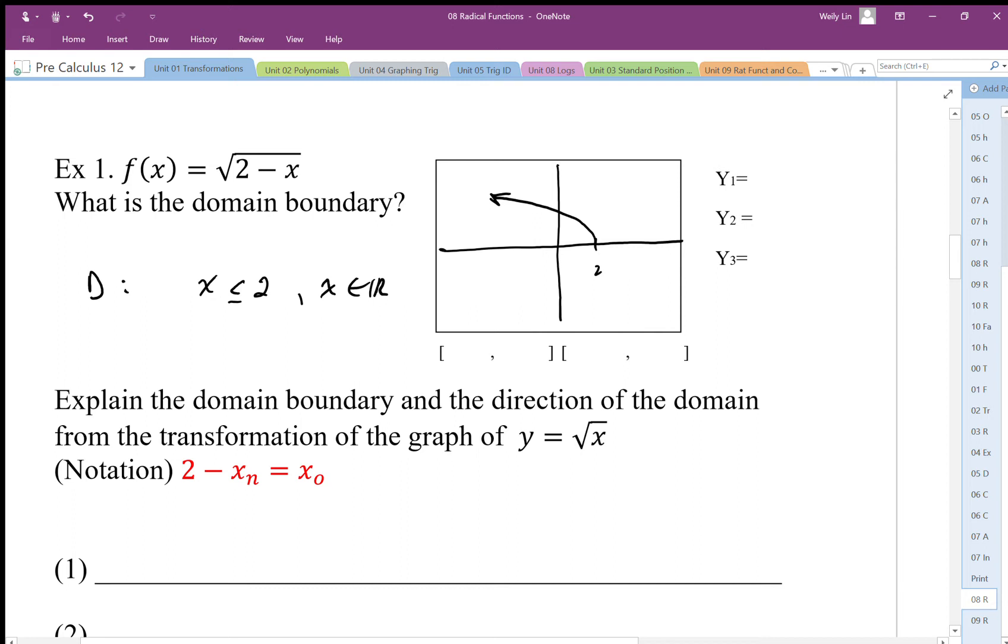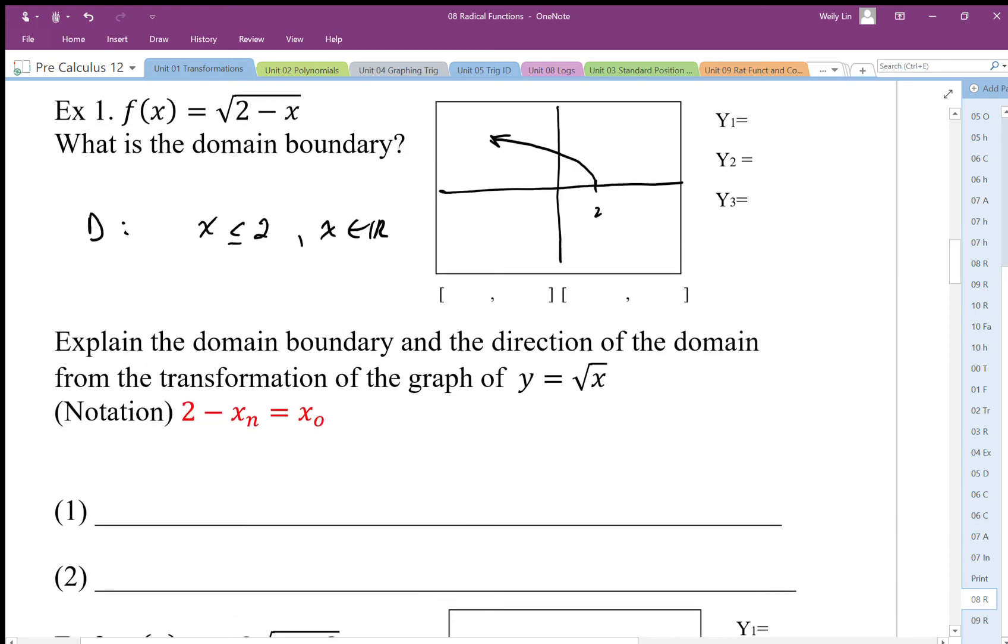Again, we have the other perspective of transformations. Well, I know that this is my transformation notation, and if I undo that notation I get x_n equals—I'm gonna go my plus 2, sorry, minus 2—and then I'm gonna flip it.